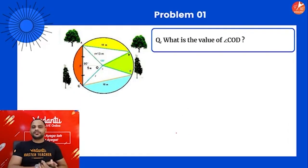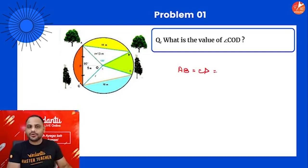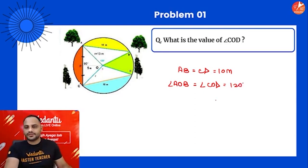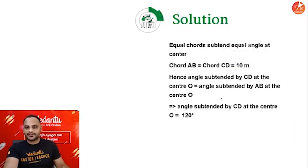First question: what is the value of angle COD? Since AB and CD are both equal to 10 meters, equal chords subtend equal angles at the center. So angle AOB equals angle COD, and both equal 120 degrees. Remember to write the reason: equal chords subtend equal angles at the center.